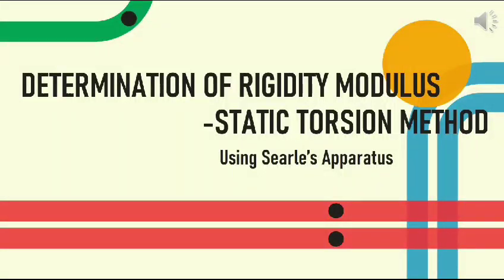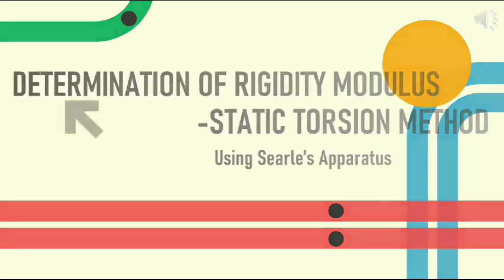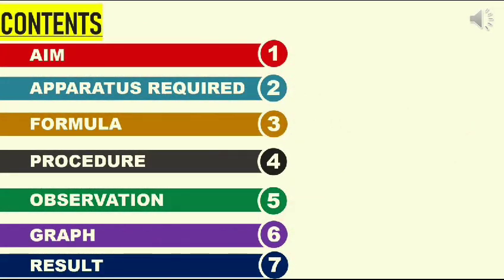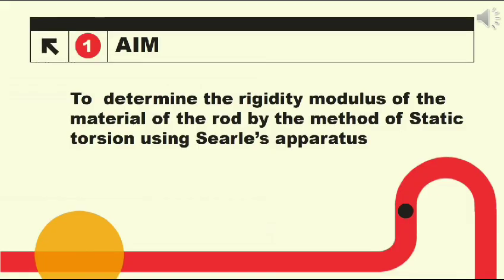In this video we are going to learn how to determine the rigidity modulus of a material of a rod by the static torsion method using Sewell's apparatus. We are going to see the following contents of determination of rigidity modulus. The aim is to determine the rigidity modulus of the material of the rod by the method of static torsion using Sewell's apparatus.